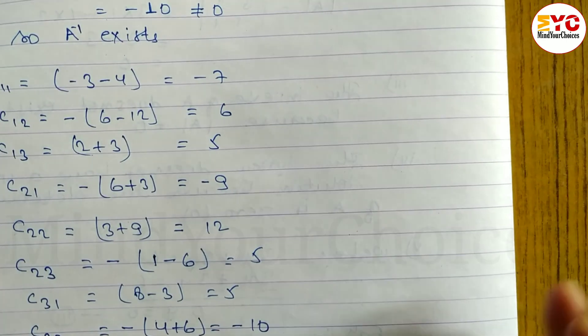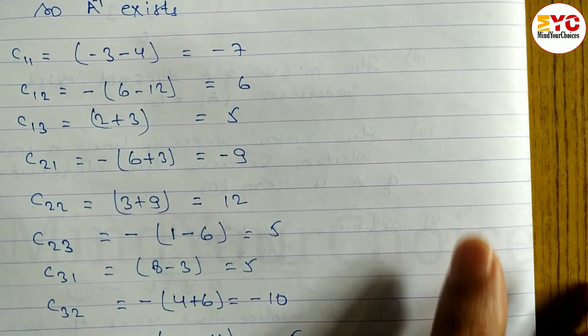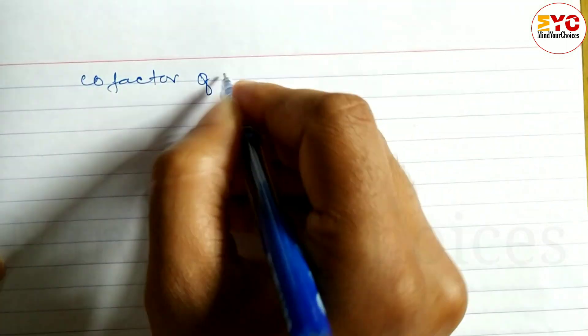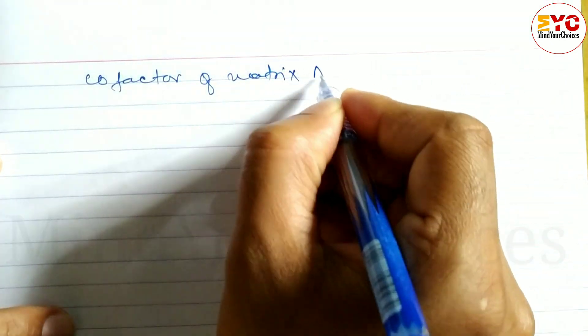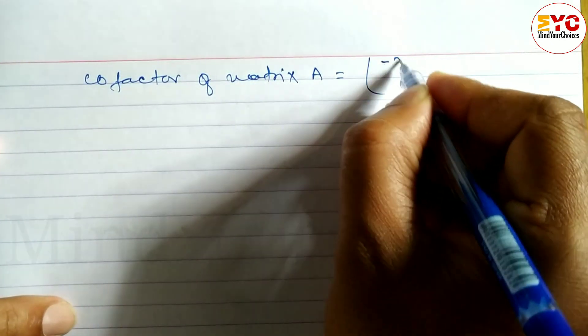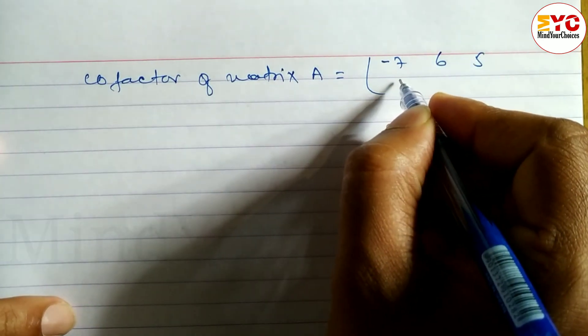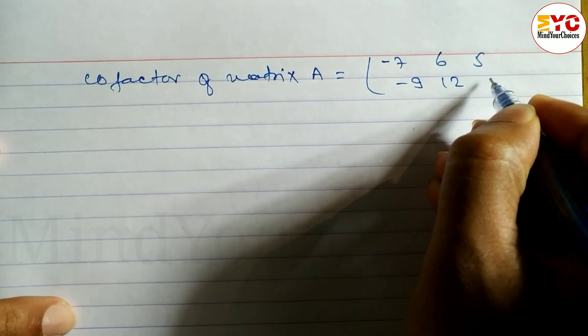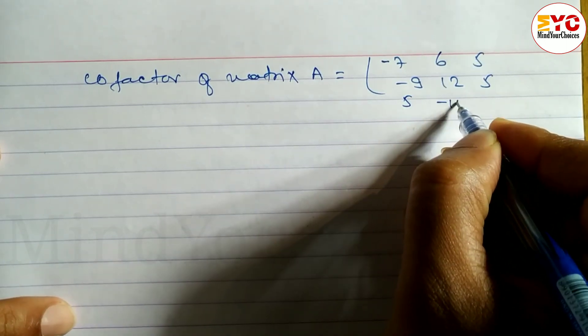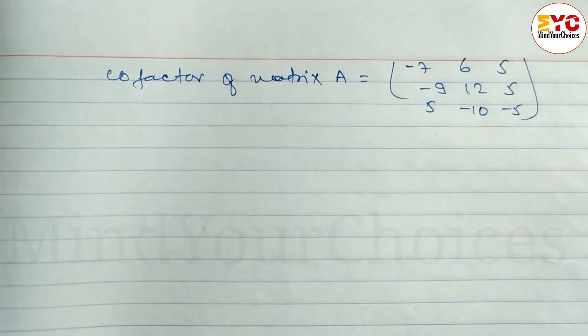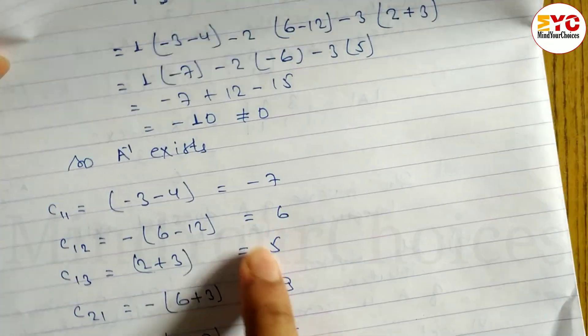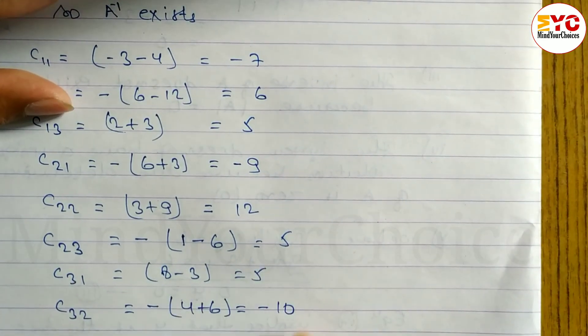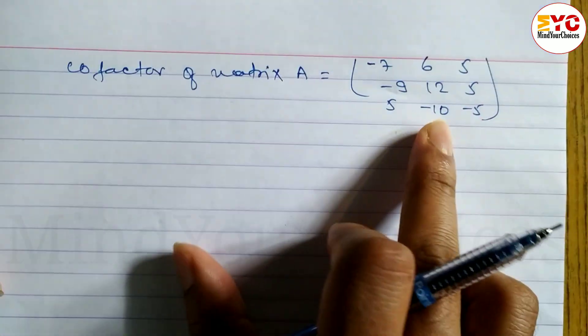Now the cofactor of matrix A is complete. We can write the cofactor matrix as: minus 7, 6, 5; minus 9, 12, 5; 5, minus 10, minus 5.